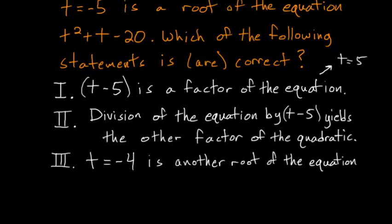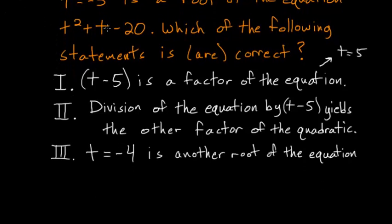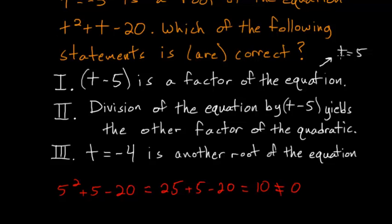And we can check this by just plugging it into the equation. So from the equation, we have t squared, so 5 squared plus 5 minus 20. This simplifies to 25 plus 5 minus 20. And this all simplifies to just 10. And since this is not equal to 0, we know that t equals 5 is not a root of the equation. So number 1 is not correct.